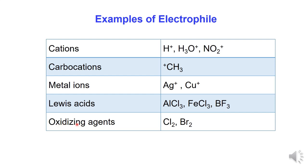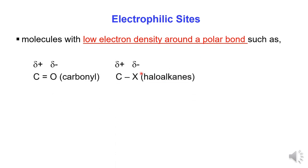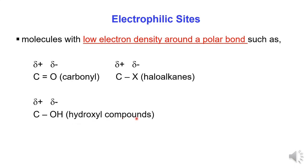5. Oxidizing agents — examples: chlorine and bromine molecules. Electrophilic sites: A molecule with low electron density around a polar bond, such as a carbonyl molecule with a polar bond between carbon and oxygen, hydroxyl acid, and hydroxyl compounds with a polar bond between carbon and the OH group.